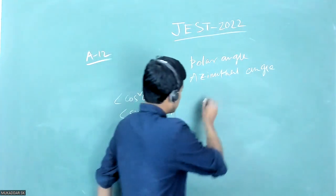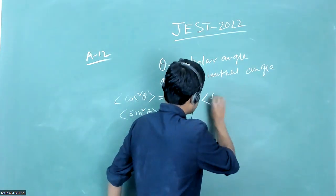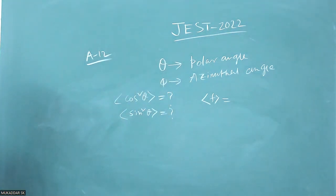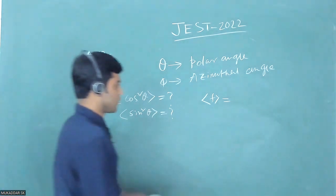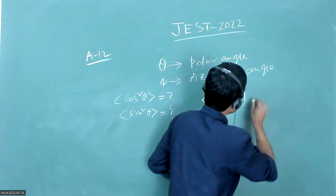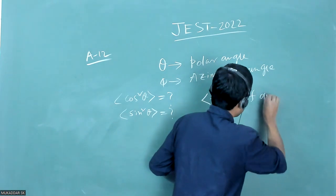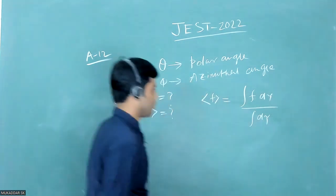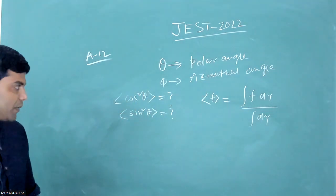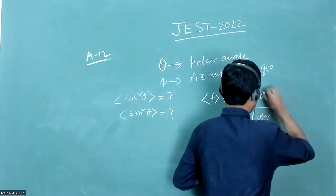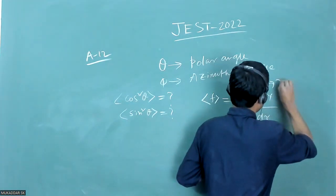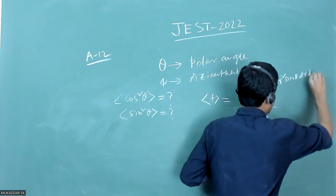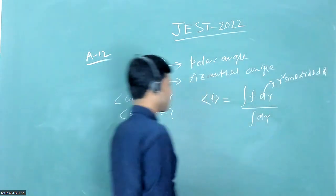As you know, the expectation value of any function in spherical polar coordinates can be represented as the integral of f dτ divided by the integral of dτ, where dτ is the volume element in spherical polar coordinates, which is r square sine theta dr dθ dφ. So I will substitute it here.